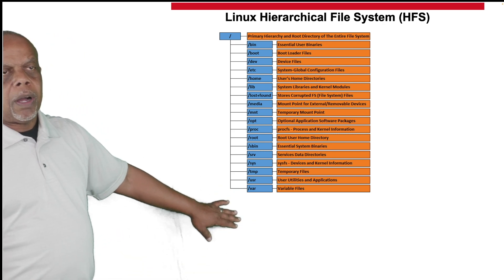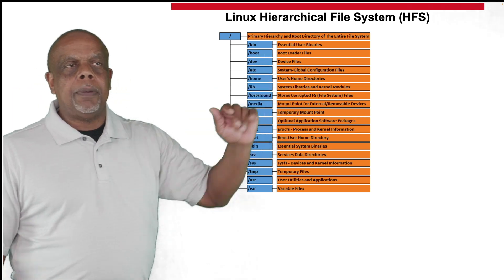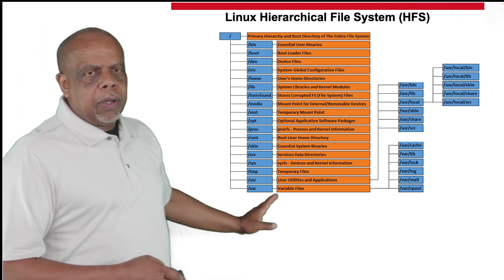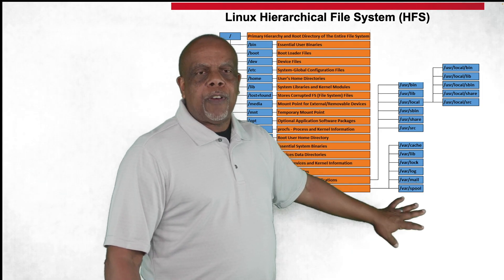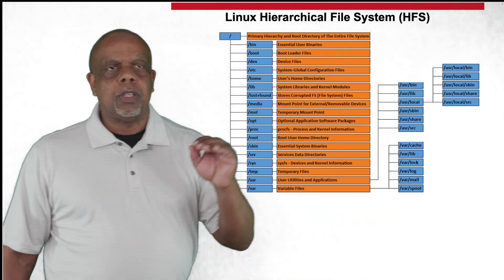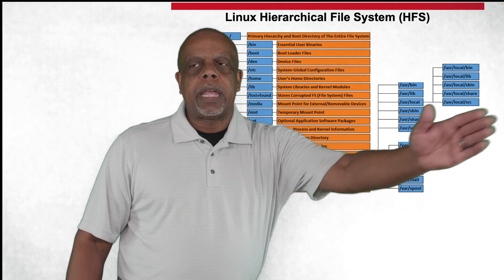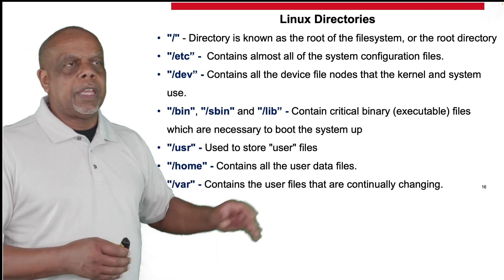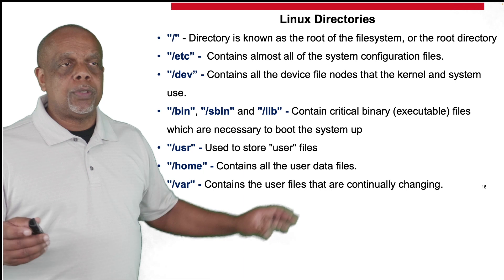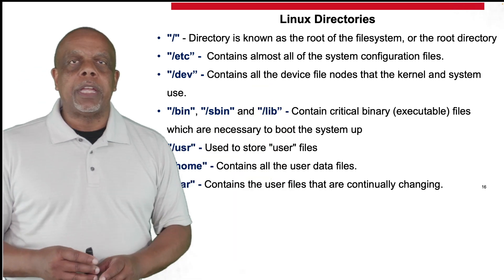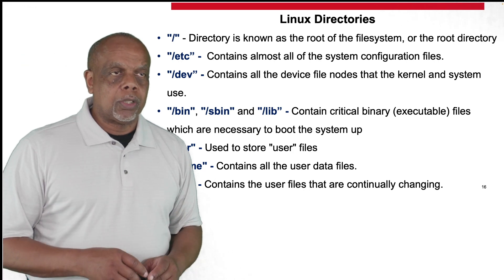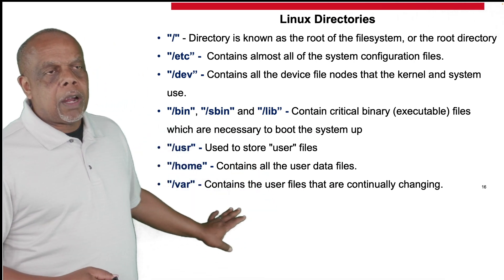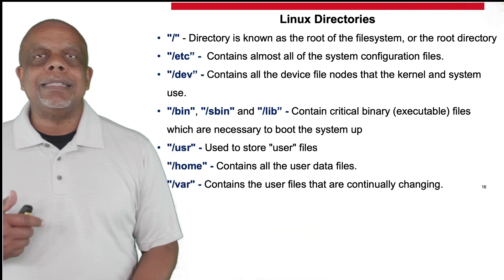Some directories you'll use quite a bit: var (where variables and user files that continually change are stored), home, lib, and especially etc and dev. In Windows, if you plug in a thumb drive, it pops up as the next drive letter — C, D, E, F. In a Linux environment it doesn't work that way; it will mount that device and see it as a file system. Each of these directories has sub-file structures, and based on user and content, they break out farther and farther.